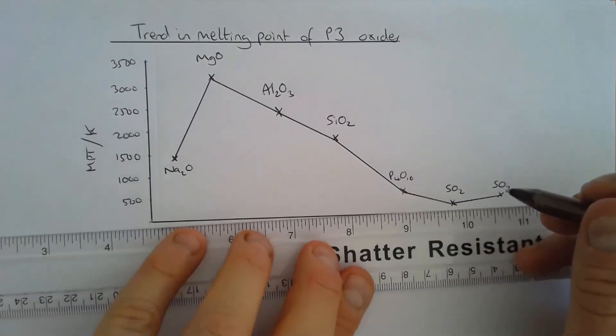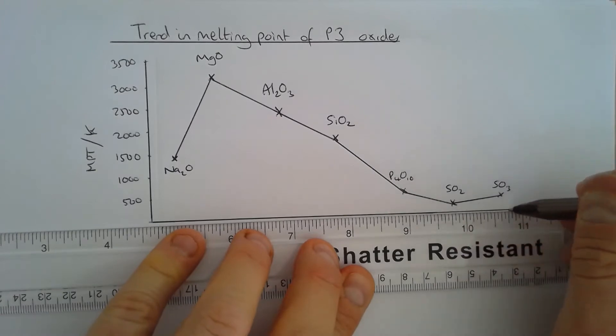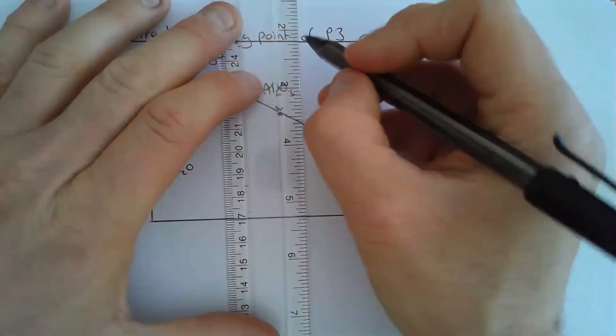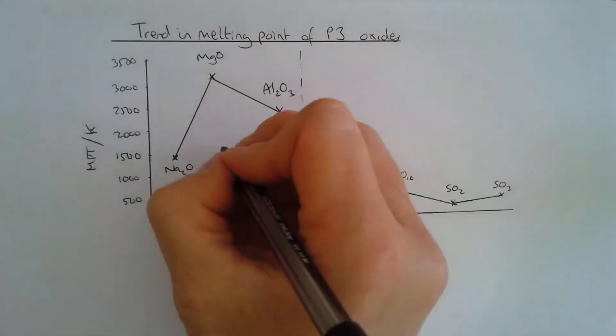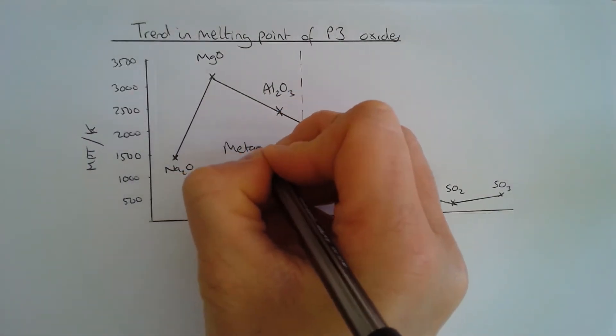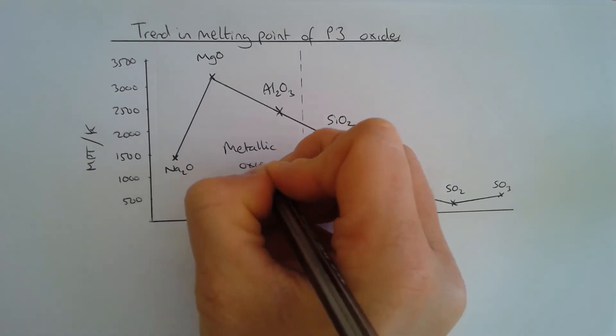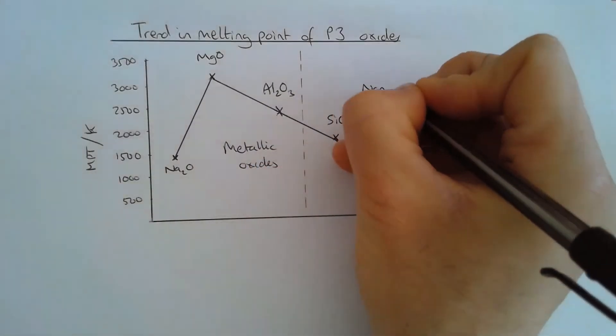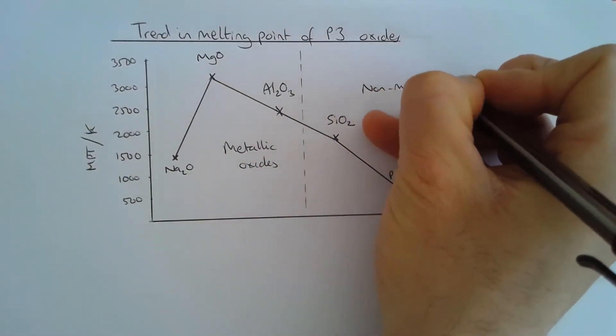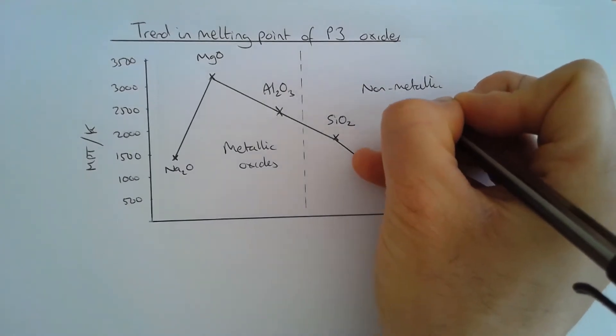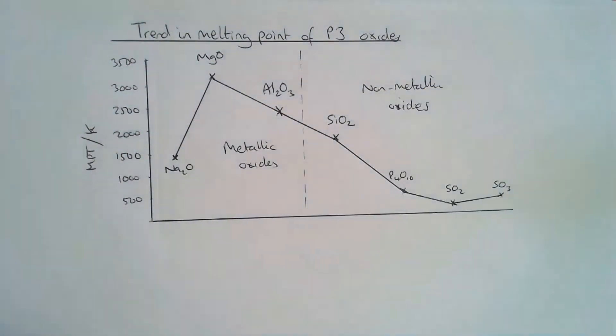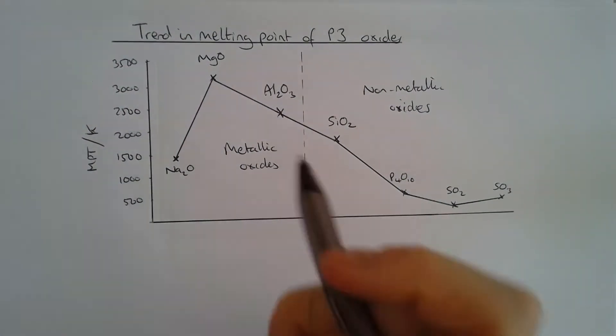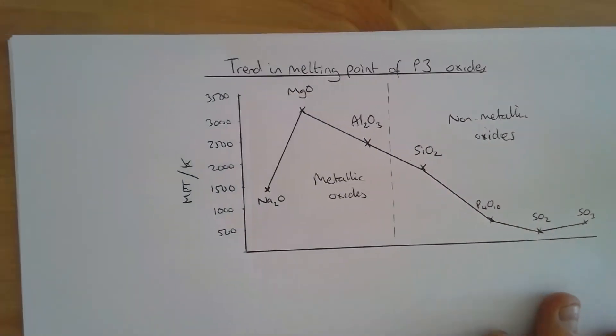OK, so let's break our graph into metallic oxides and non-metallic oxides. Because this not only allows us to explain physical properties, it will also help us to explain chemical properties. So let's deal with metallic oxides. And I'm talking first of all about sodium and magnesium oxide.